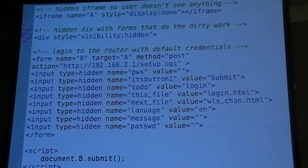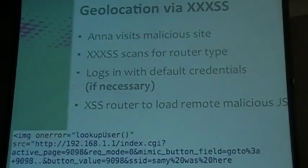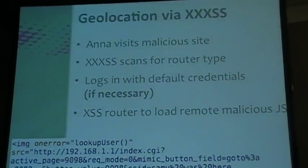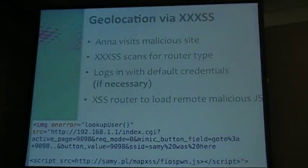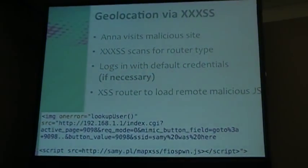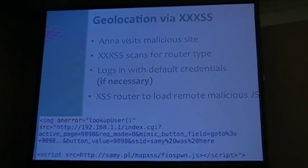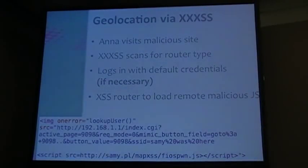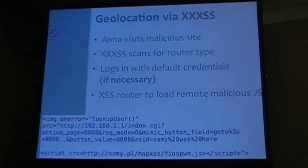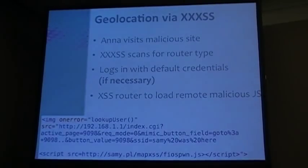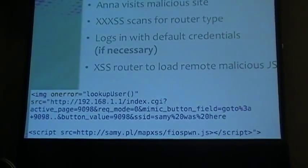Now, this isn't necessarily required in our geolocation triple XSS attack, but here's what happens: Anna visits the site, we scan for the router type, and depending on the router we may try to log in — or we may not even need to. Then we XSS the router and load remote malicious JavaScript. This is a real exploit on FIOS routers where it hits an XSS vulnerability and then accesses a remote URL with JavaScript.